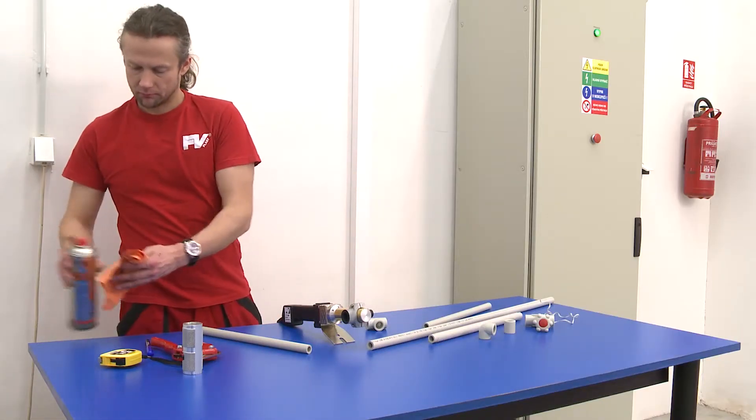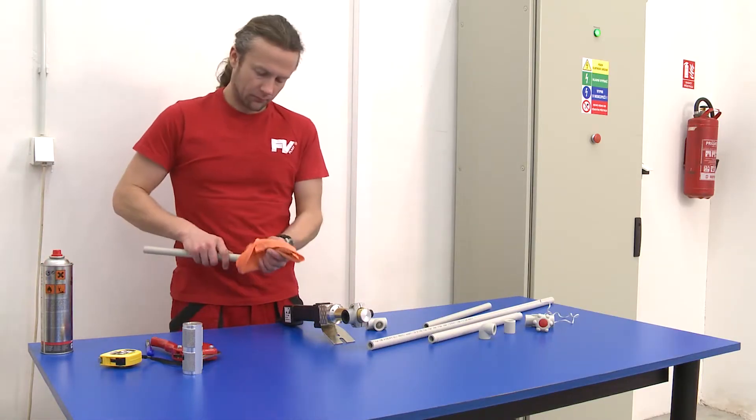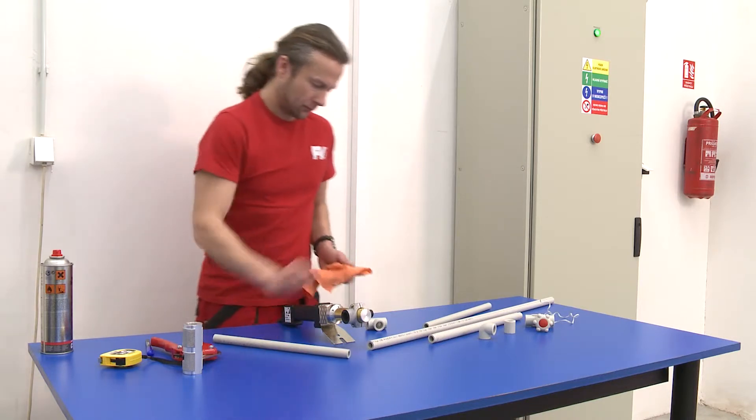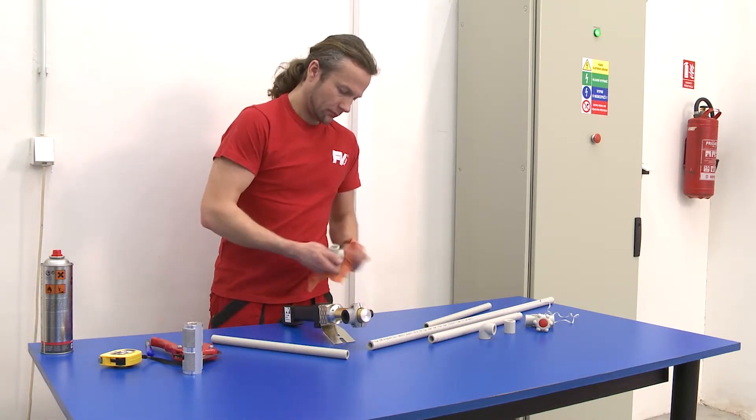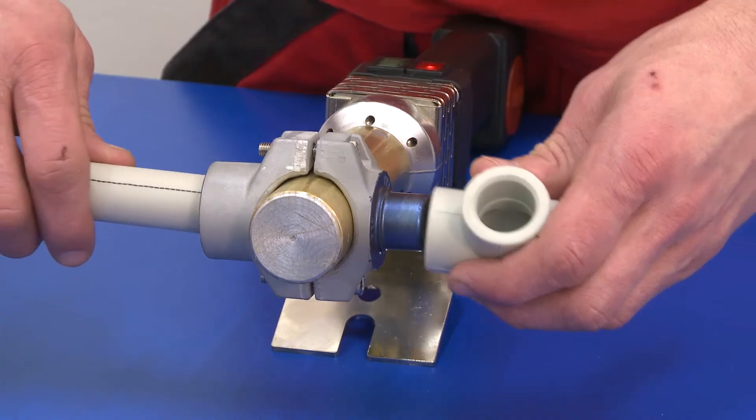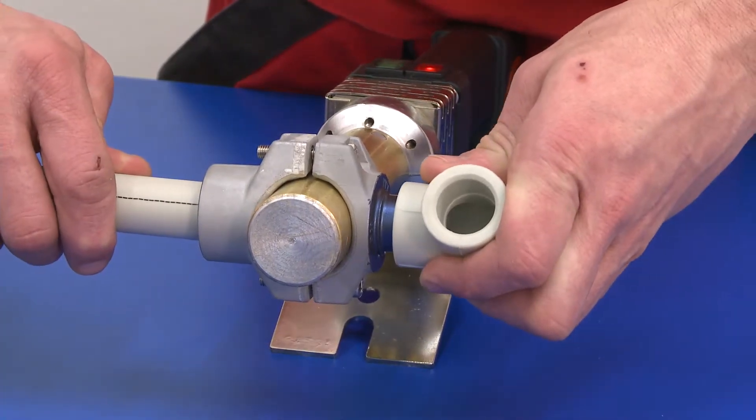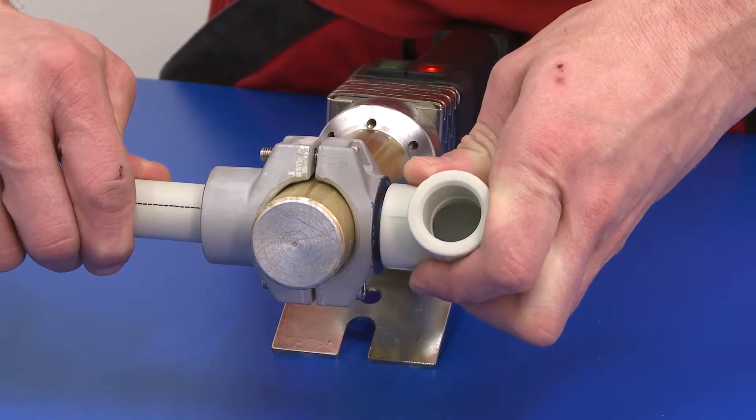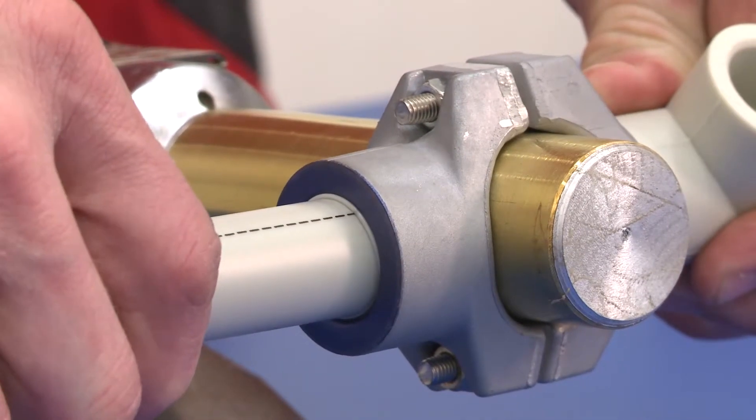The cut pipe ends must be degreased. At the same time we degrease the inner surface of the fitting. We put the fitting on the mandrel and insert the tube into the hot mandrel. Then we warm both parts for a period of time specified by the profile.